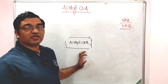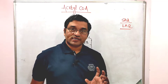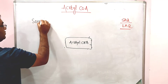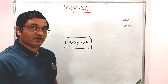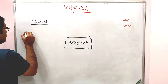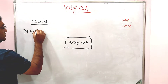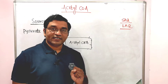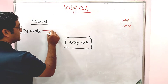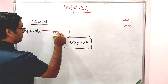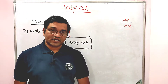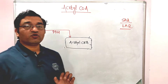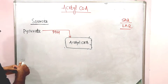Anabolism means synthesis of acetyl coenzyme A, and its degradation is known as catabolism. Coming to the sources of acetyl coenzyme A, the first important source is pyruvate. In glycolysis, glucose is converted into pyruvate, and via the pyruvate dehydrogenase complex — the connecting link between glycolysis and TCA cycle — pyruvate is converted into acetyl coenzyme A. One molecule of glucose gives two molecules of pyruvate, yielding two molecules of acetyl coenzyme A.